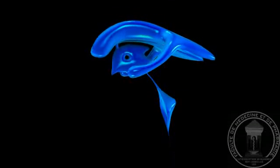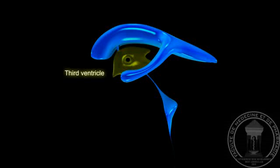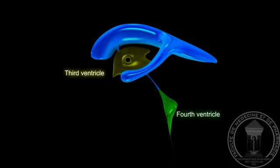The third ventricle is connected to the fourth ventricle in the brain stem by the aqueduct of Silvius.